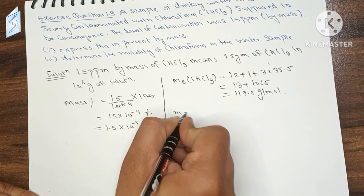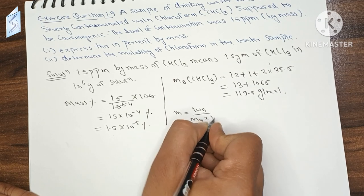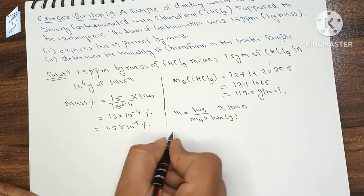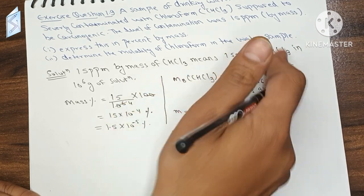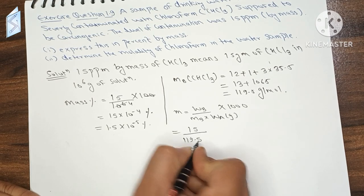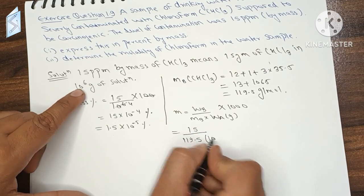Now, let's calculate molality. Molality will be WB by MB into 1000 by mass of solvent in grams. So W is 15 grams, molar mass MB is 119.5, and mass of solvent is our solution mass 10 to the power 6 minus 15.